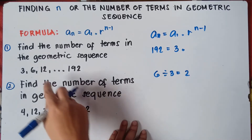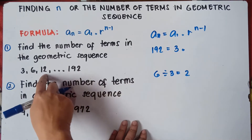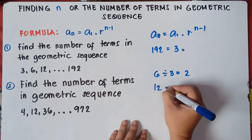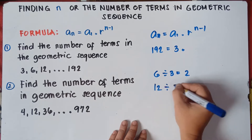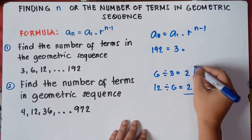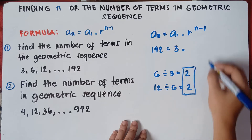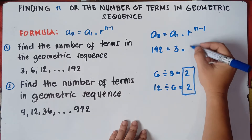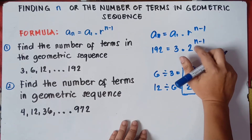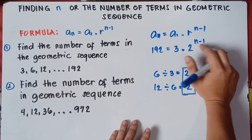You can also check: third term divided by the second term. 12 divided by 6, that is 2. So therefore, the common ratio is 2, raised to the power of n minus 1. So we will be finding this n, the number of terms.